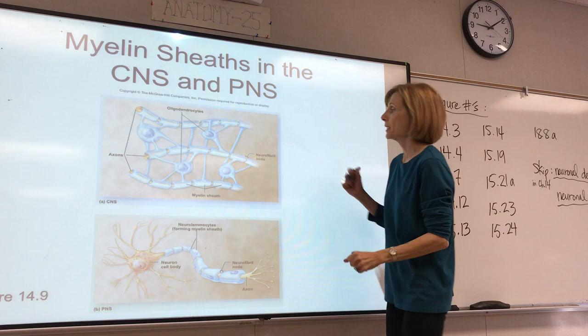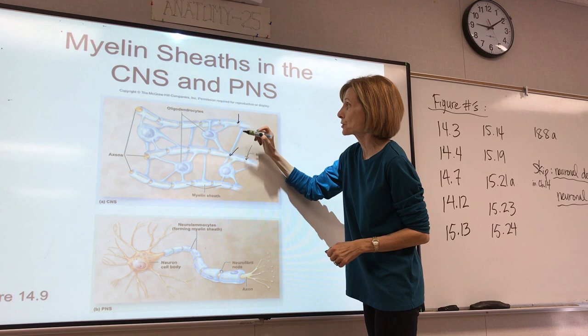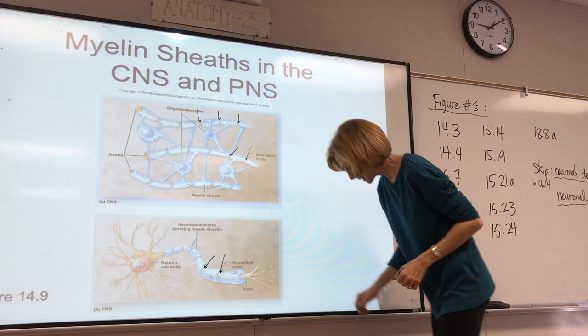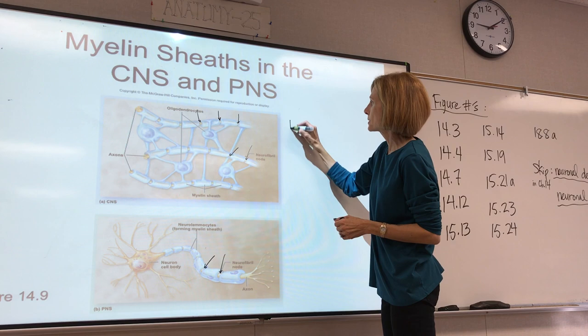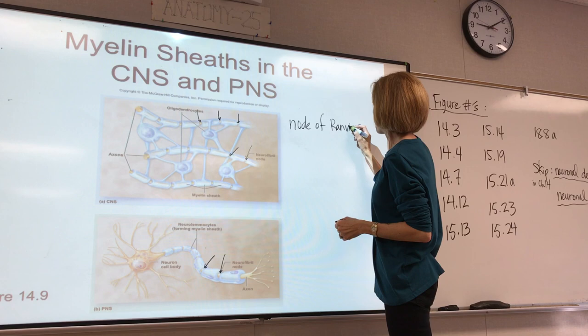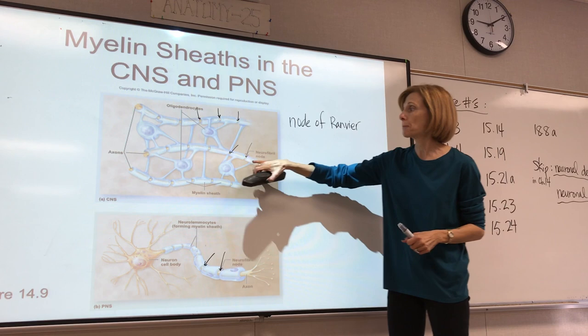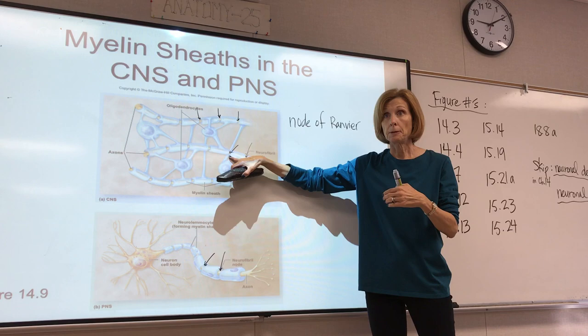The neurofibril node is where the axon is bare — those little sections of yellow are the naked axon, in between the areas of the myelin sheath. These are also called nodes of Ranvier — it's a French name, pronounced Ranvier, like Perrier. You can say neurofibril node — either is fine. These are important because this is the only place that the action potential is transmitted in a myelinated axon.